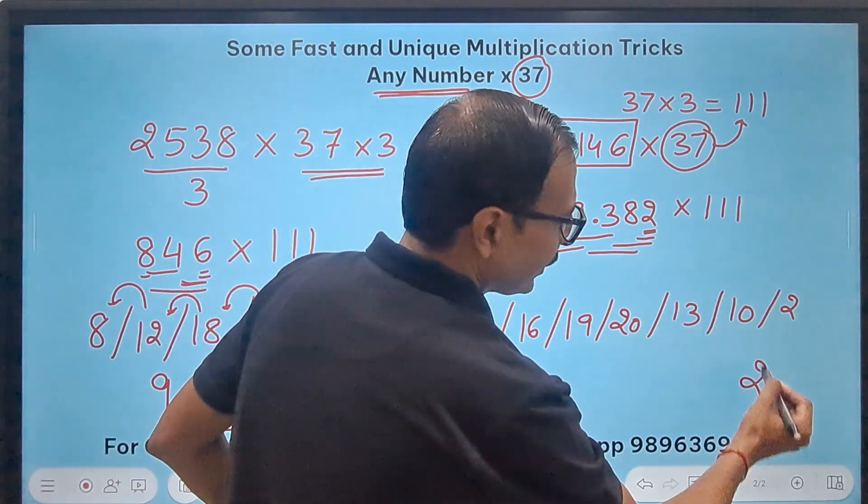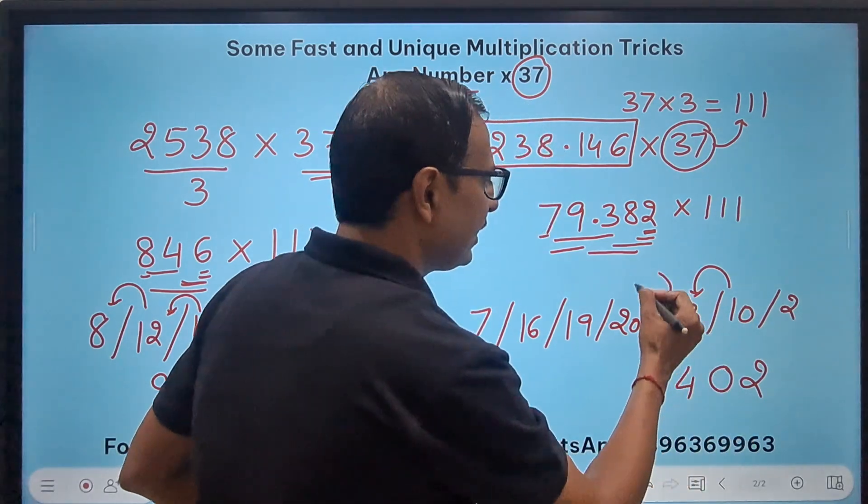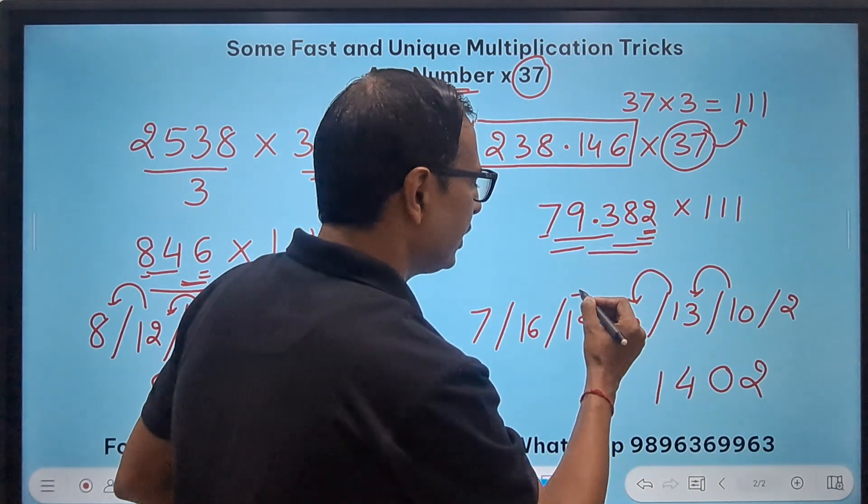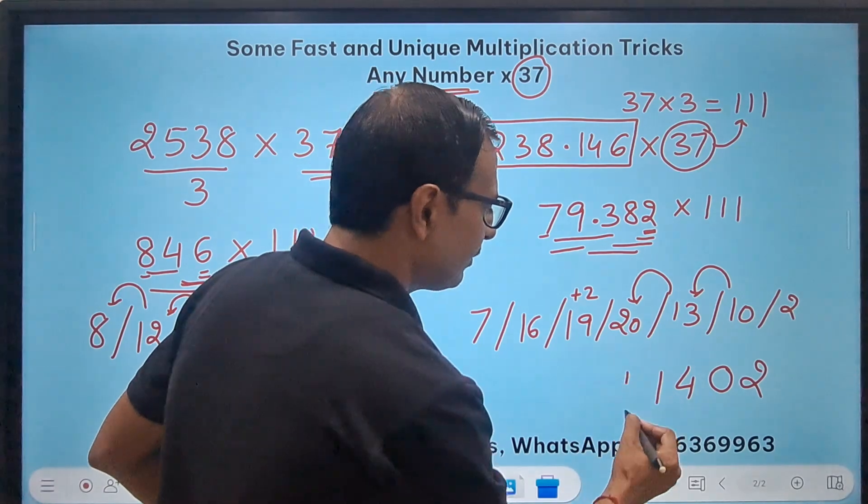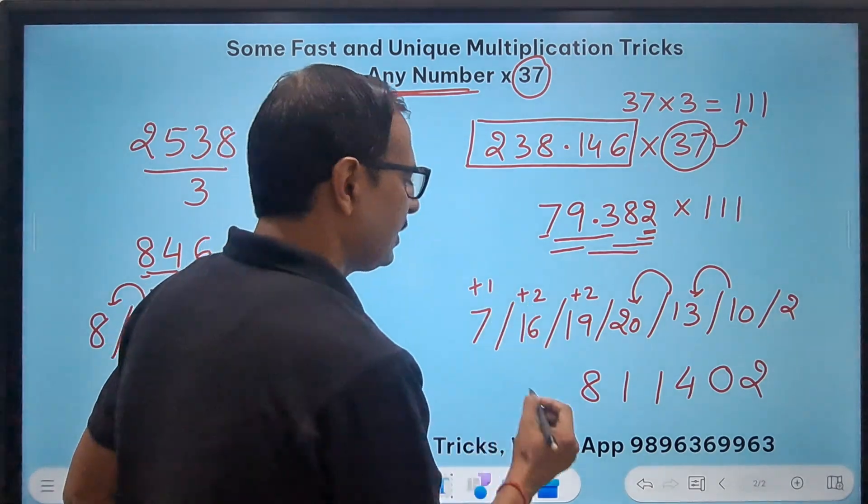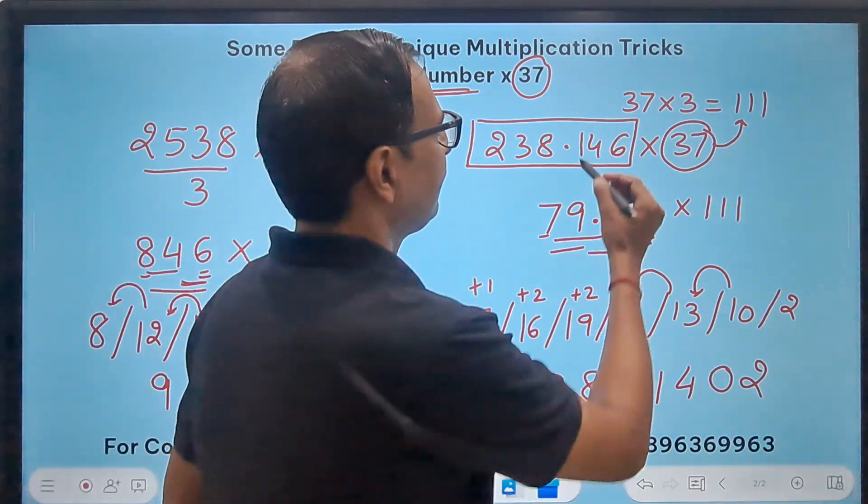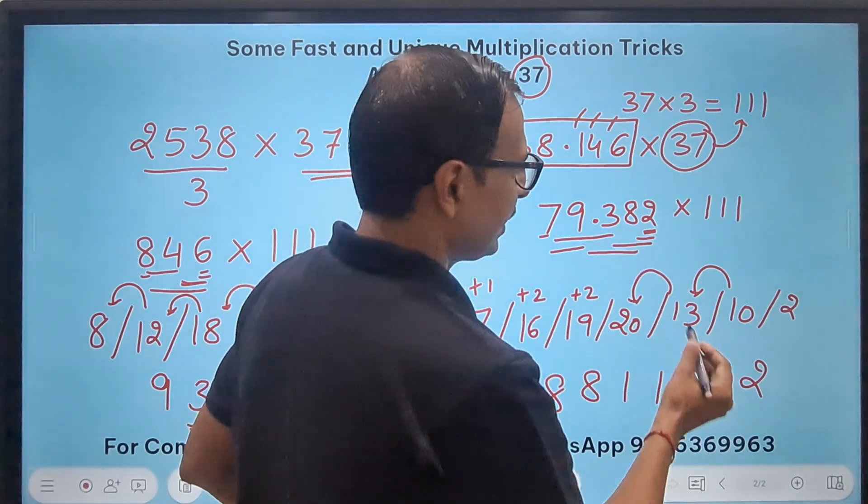Now start writing 2, 10 means 0 and a 1 carry, 14 means 4 and a 1 carry, 21 means 1 and a 2 carry, again 21 means 1 and a 2 carry so this is 18, 8 and a 1 carry gives us 8.